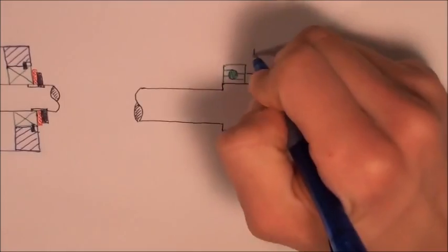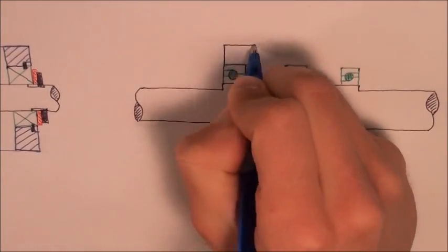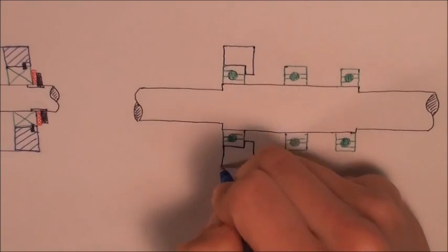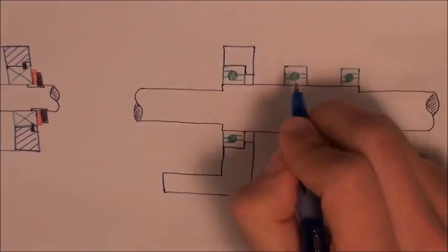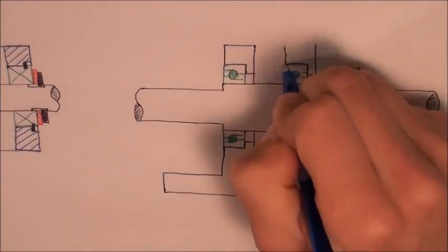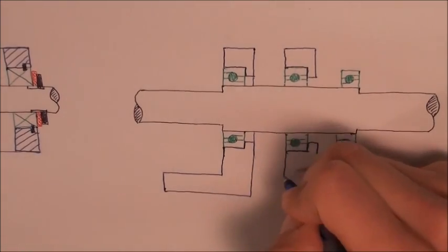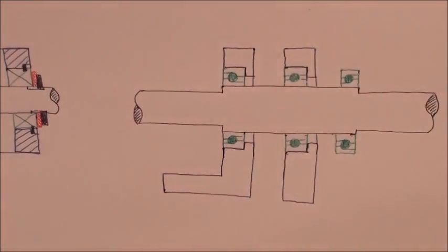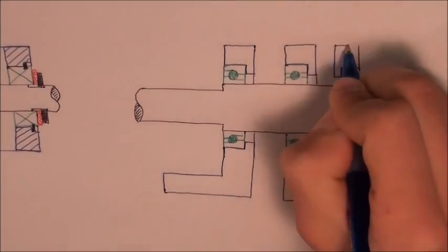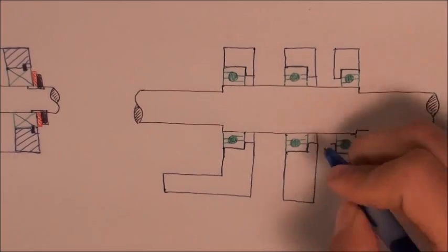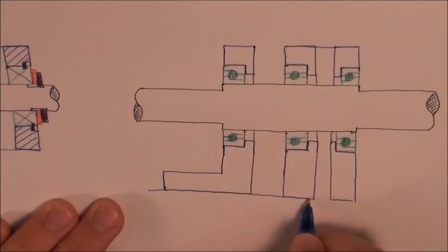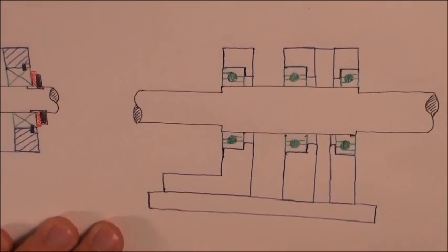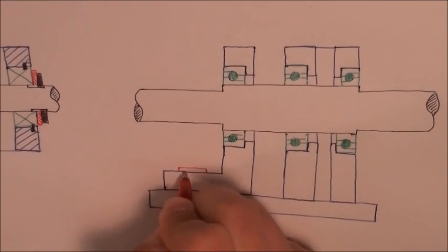For each bearing I'm going to add a mount with a shoulder on it. And I will join the two right mounts together. The left mount I will make movable by attaching it to the base like so.